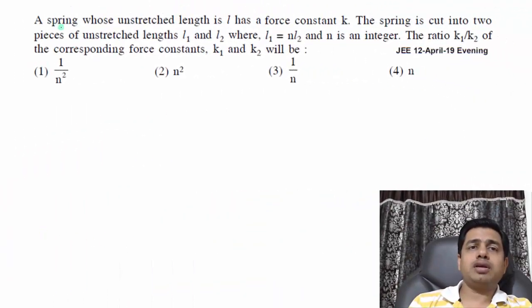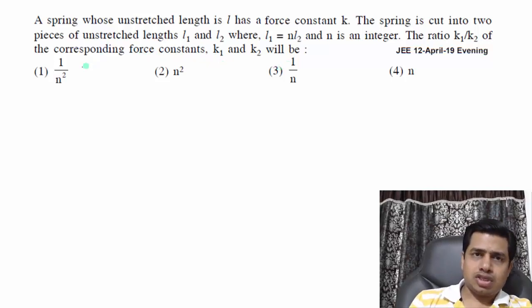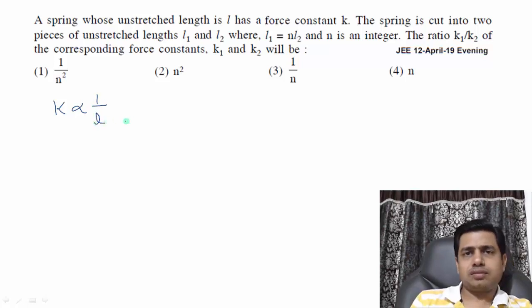Next question: a spring whose unstretched length is L has a force constant K. The spring is cut into two pieces of unstretched lengths L1 and L2, where L1 = nL2, and n is an integer. The ratio K1/K2 of the corresponding force constants K1, K2 will be? For any spring, K is inversely proportional to length. Simple point is that K1/K2 will be L2/L1. And L2/L1, we can see from the question here, L1 = nL2 is given, so L2/L1 equals 1/n. So the third option is the answer.